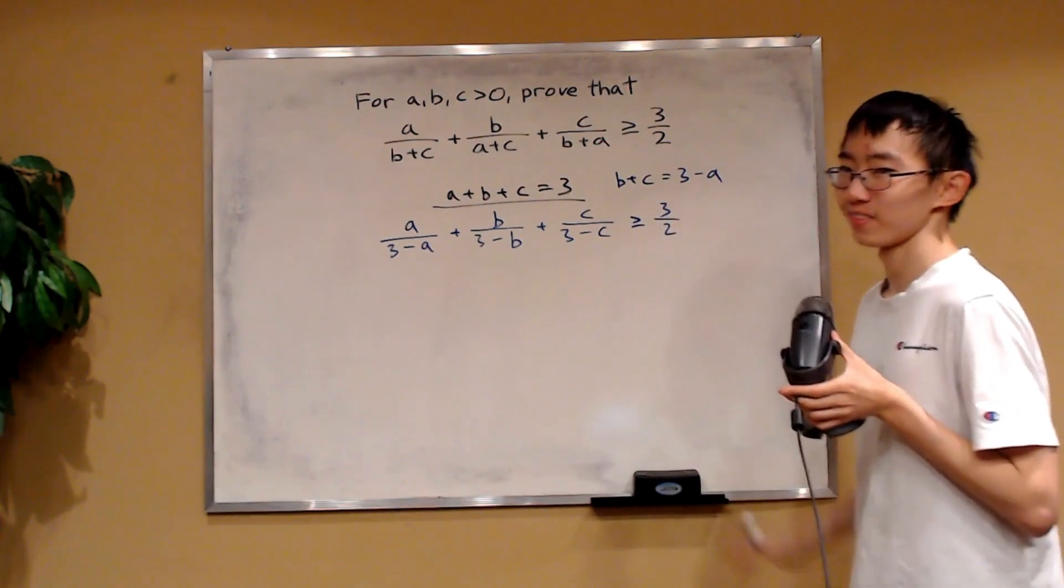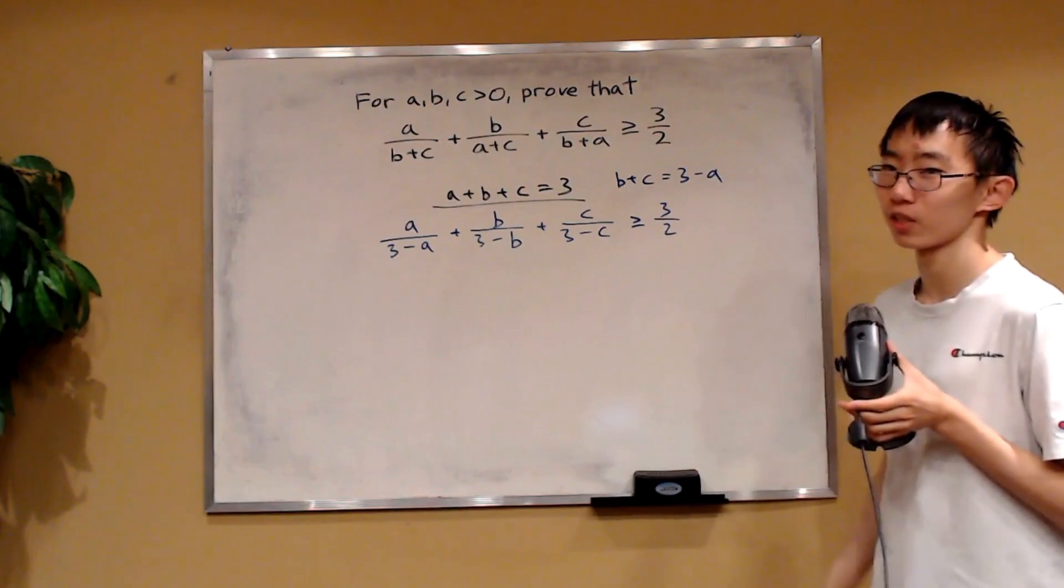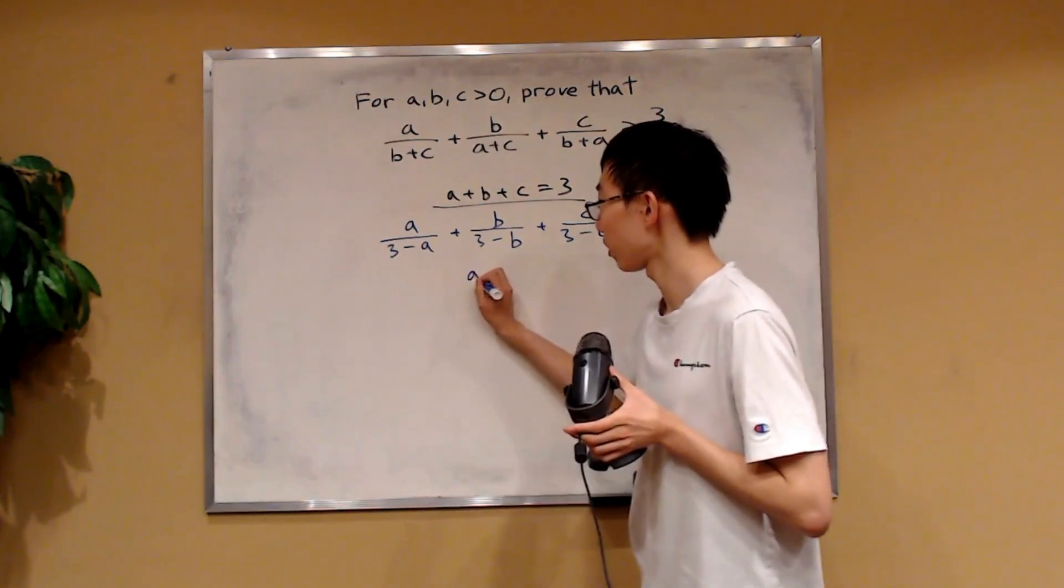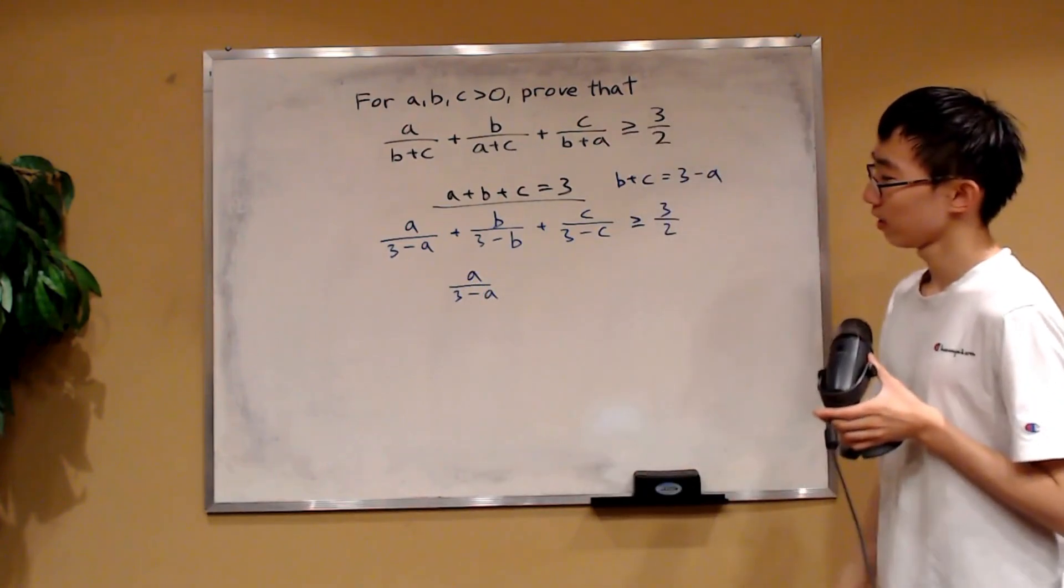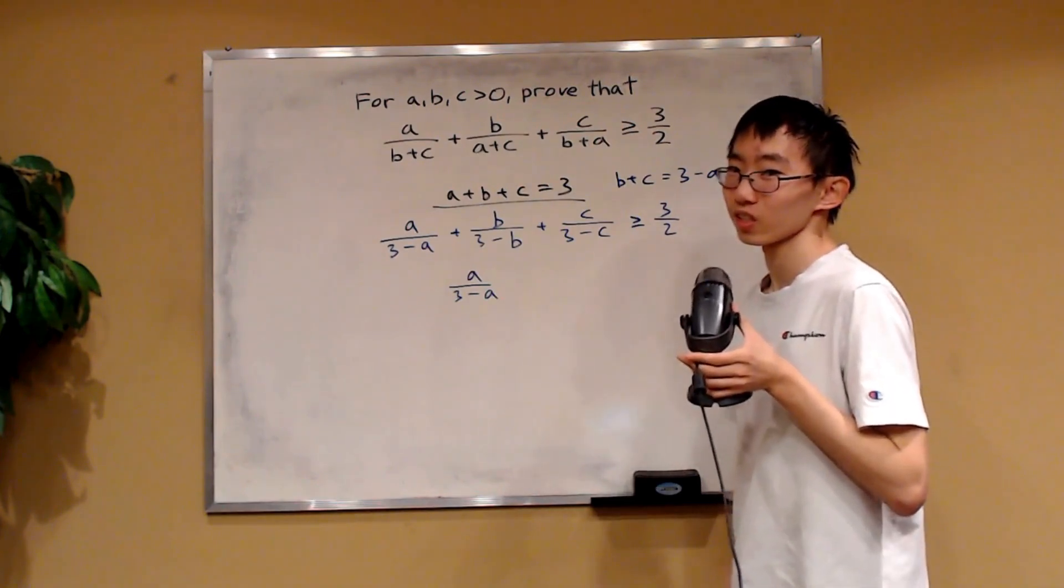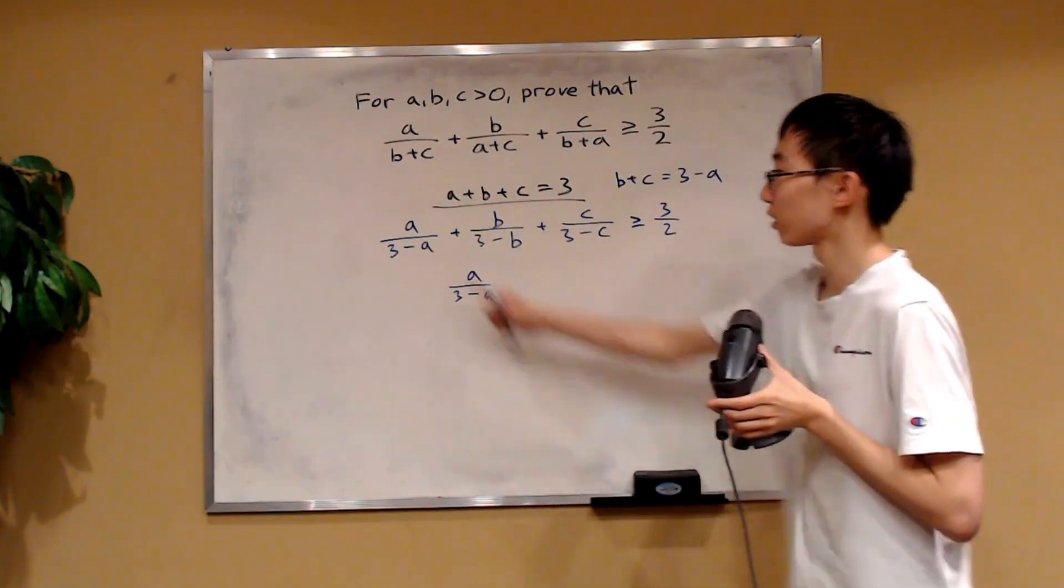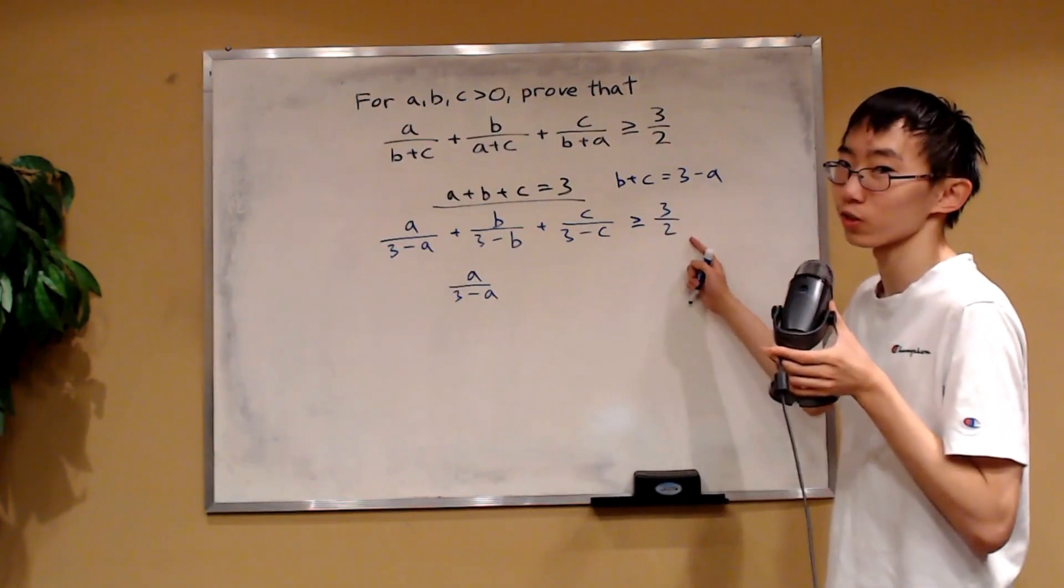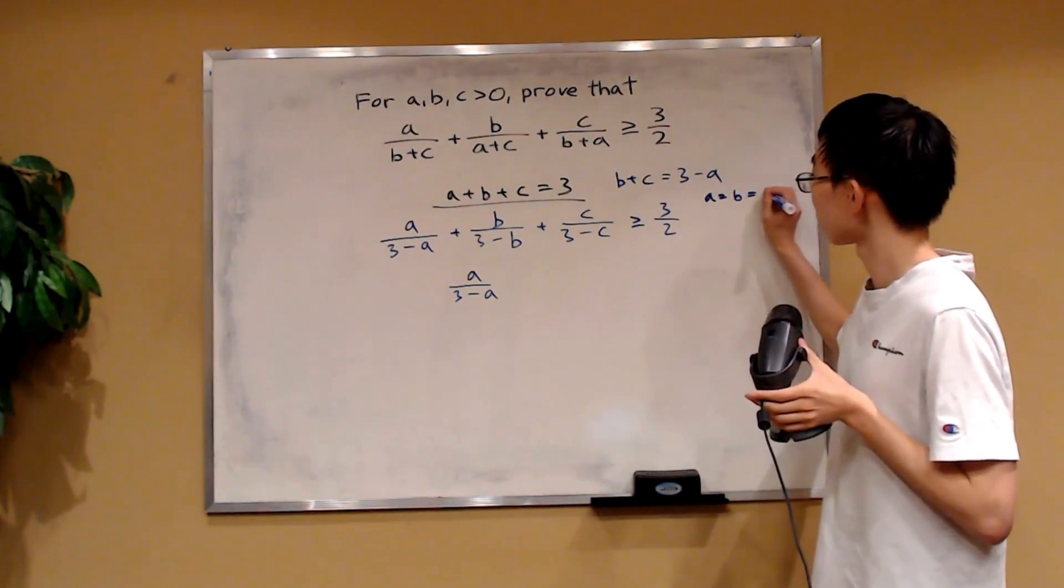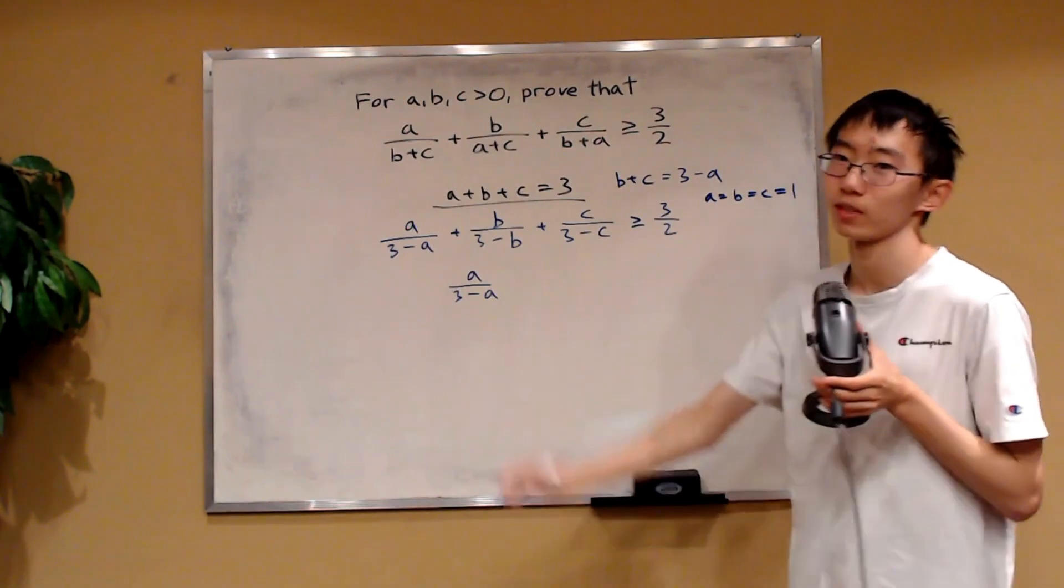Now, much better, right? We can just analyze each individual term because they're just a function of one variable. So let's just take this, A over three minus A. Firstly, can you spot the equality condition? In other words, can you spot what A, B, and C can be such that this will be equal to three over two? Well, you will notice that A equals to B is equal to C is equal to one is an equality condition. It certainly is if you were to just plug them in and verify yourself.